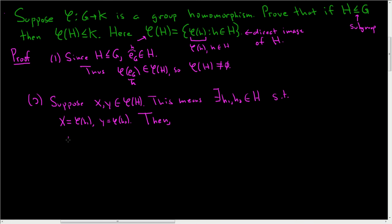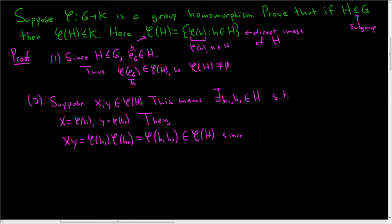So let's look at that product. Then xy equals phi of h sub 1 times phi of h sub 2. But phi is a group homomorphism, so this is just phi of h sub 1 times h sub 2. And this is certainly an element of phi of H, since h1 times h2 is in H, because H is closed under the group operation — it is a subgroup. So we have phi of an element in H, and that's what it means to be in phi of H.